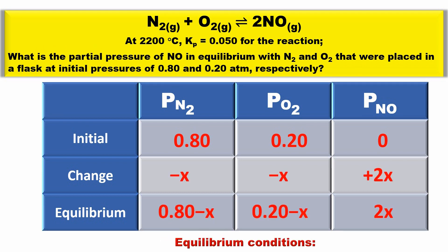The equilibrium conditions will be 0.80 minus x, 0.20 minus x, and 2x for the nitrogen, oxygen, and nitrogen monoxide respectively.